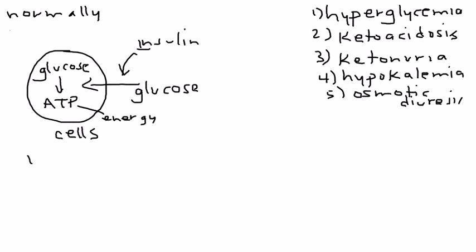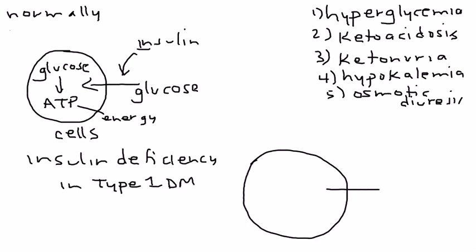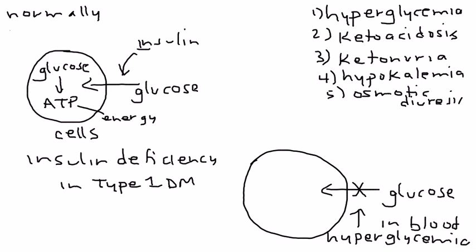Now, what happens in insulin deficiency, which is a consequence of having type 1 diabetes, is that the cell, now all of a sudden the glucose can't go inside. So if the glucose can't go inside the cell, the glucose then accumulates in the blood. And increased levels of glucose in the blood are known as hyperglycemia. So that's the first part of the five things.